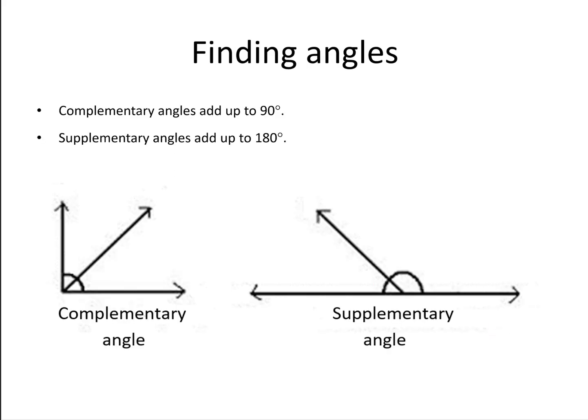Finding angles. Complementary angles add up to 90 degrees. So if I have one part of a right angle, I can find out the other part. Or if I've got three parts in a right angle and I know two of them, I can find the third.